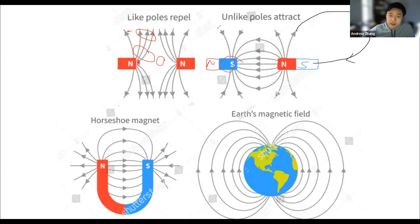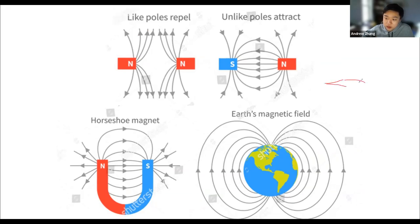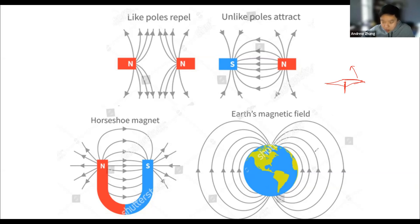Earth's magnetic field is what lets us use compasses. Basically the way compasses work is it's just a small piece of some magnetic material like iron, and you have a needle on something that can spin — ideally frictionless. Because it's magnetic, it'll be forced to align with the Earth's magnetic field. So if you have a compass, it'll point towards the direction along the Earth's magnetic field, which always points from the south pole over here to the north pole in this direction.